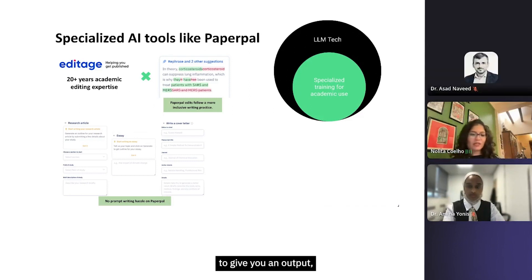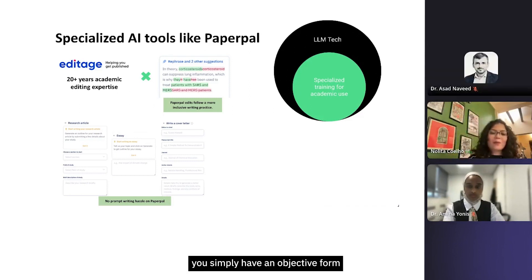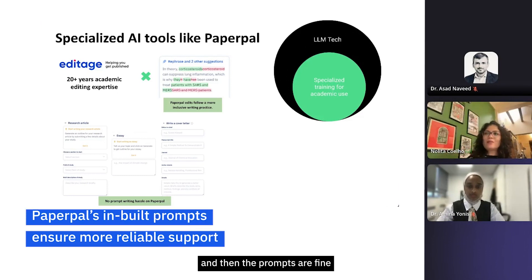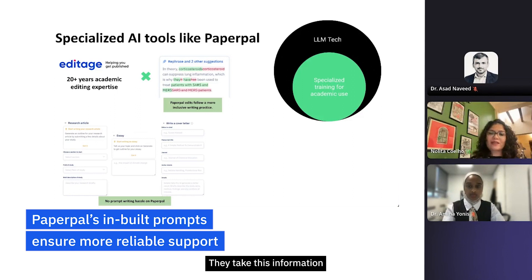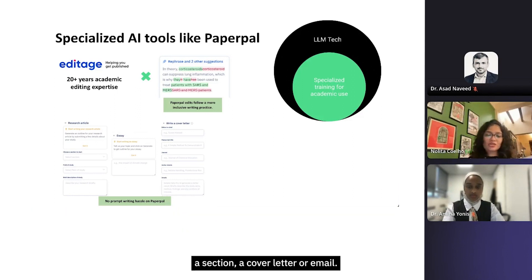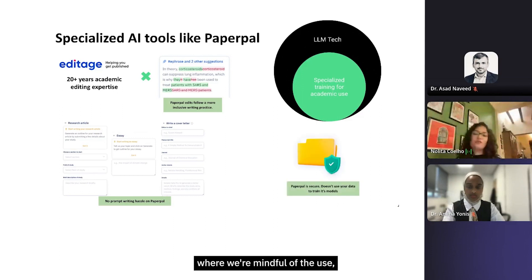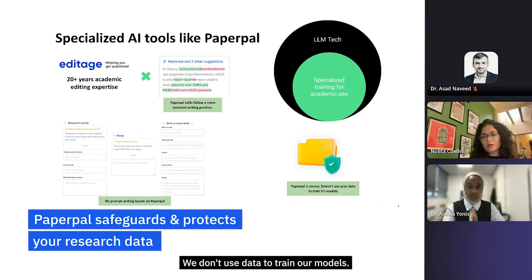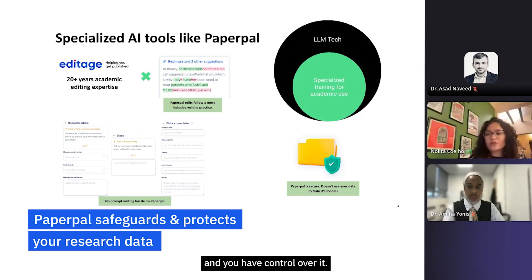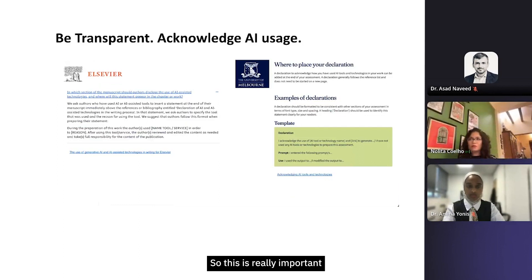Compared to a long paragraph-length prompt you might enter into ChatGPT, in Paperpal you simply have an objective form where you enter or select information, and the prompts are fine-tuned at the back end. This gives you the output you need — whether you're writing an outline, a section, a cover letter, or an email. And importantly, Paperpal doesn't use your data to train its models, so you have full control over whatever you input.